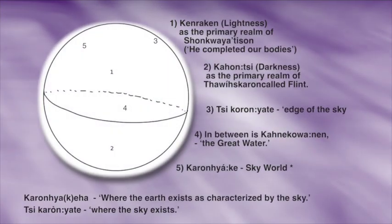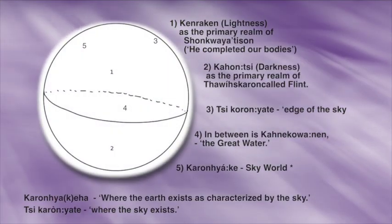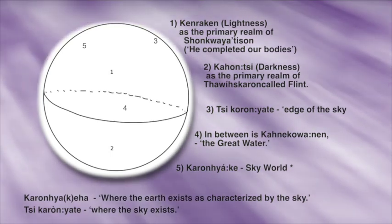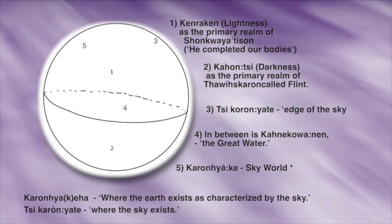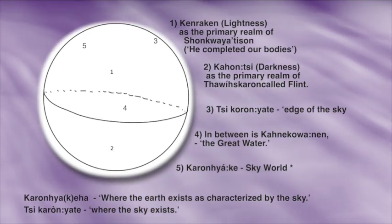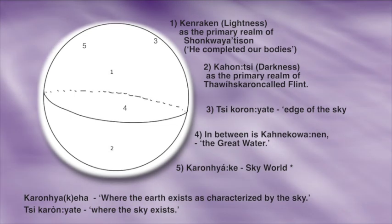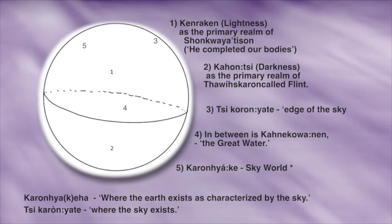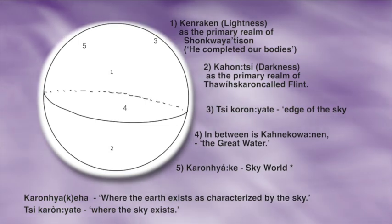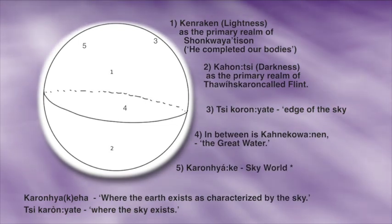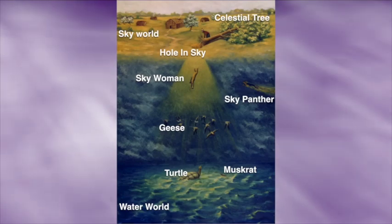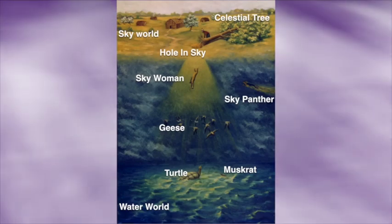We have to understand that the Haudenosaunee universe is like a sphere. There's a world above called the sky world, and there's also this sky dome that holds the celestial bodies that we see. There's a big ocean in the middle, and below it is a dark world, a water world. These are all elements that come into play in defining us. The light world we're in represents daylight, the good times, the time of the creator. The dark world is when sunlight disappears and darkness takes over, and his brother Flint begins to rule the world.